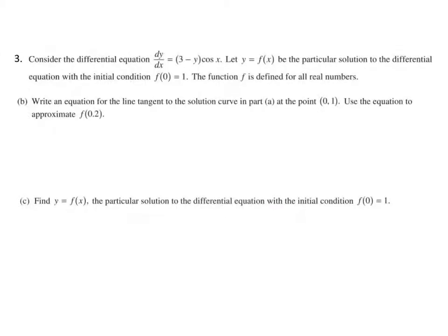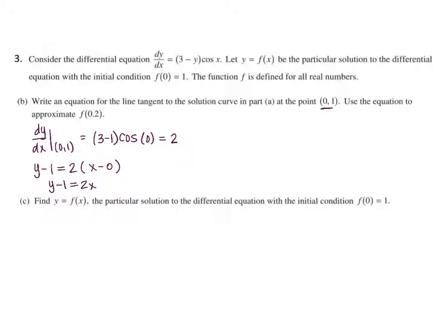For the next part, they want us to write an equation of the line tangent at the point (0, 1), then use that to approximate. You're given your x and y. We need to evaluate our derivative at (0, 1), which gives us 3 minus 1 times cosine of 0, giving us a slope of 2. So we have y minus 1 equals 2x, then we change that to f(x) equals 2x plus 1, and substitute in 0.2. Once you make this substitution you don't really need to do much more — that does receive our full credit.